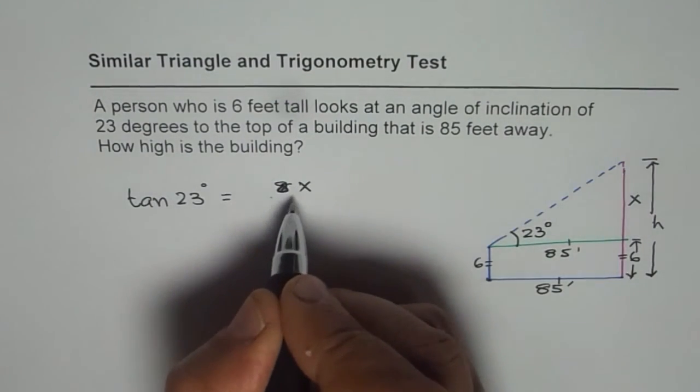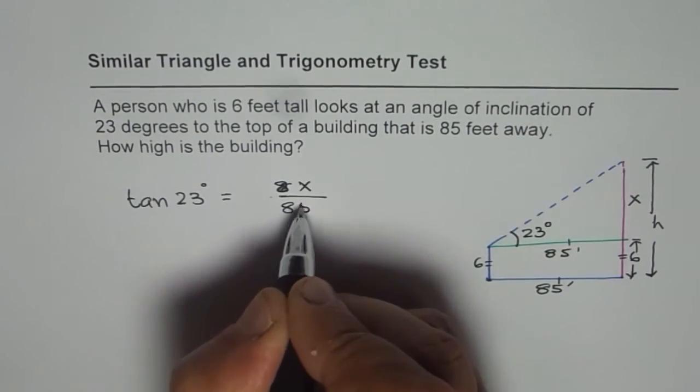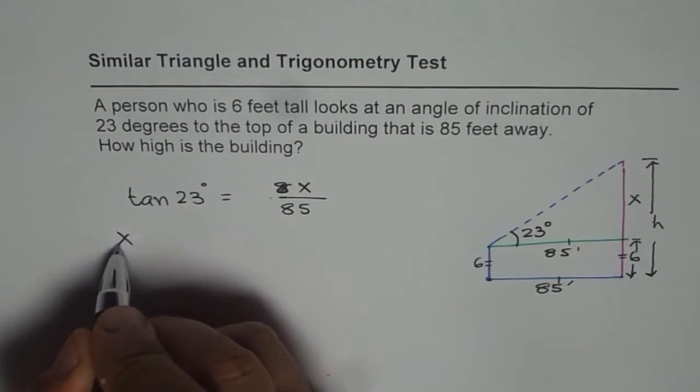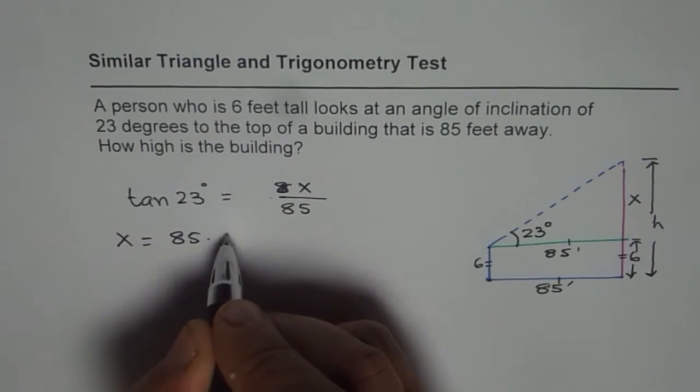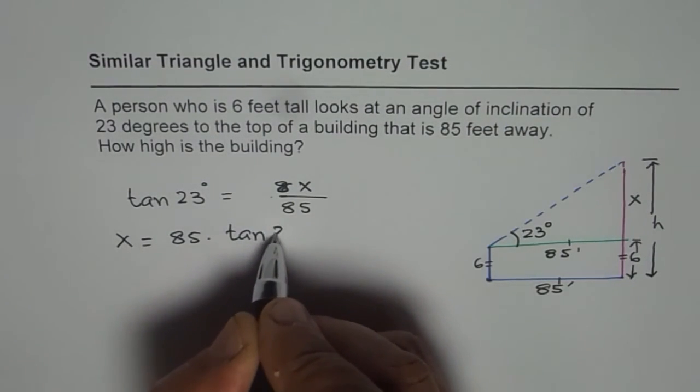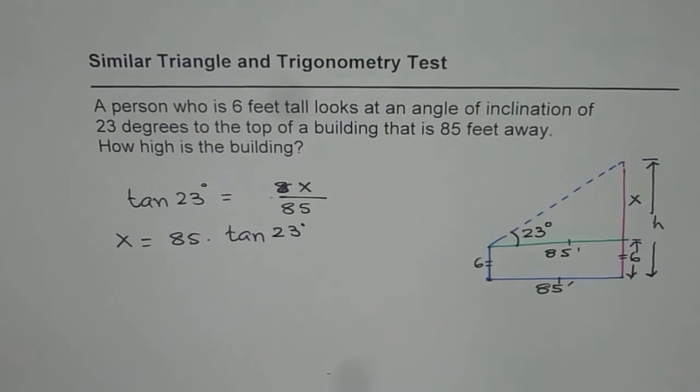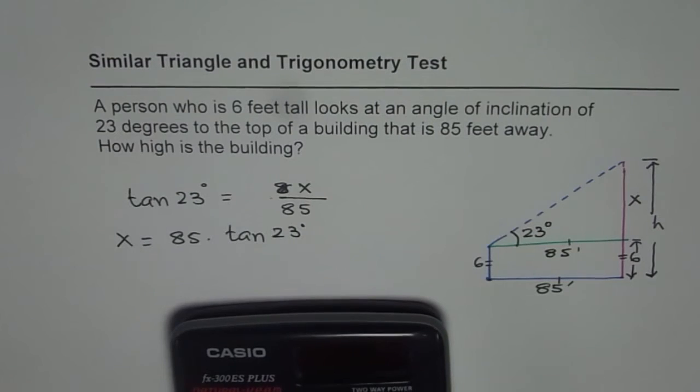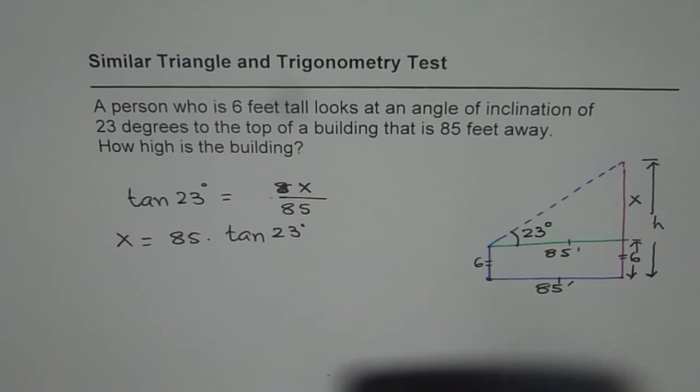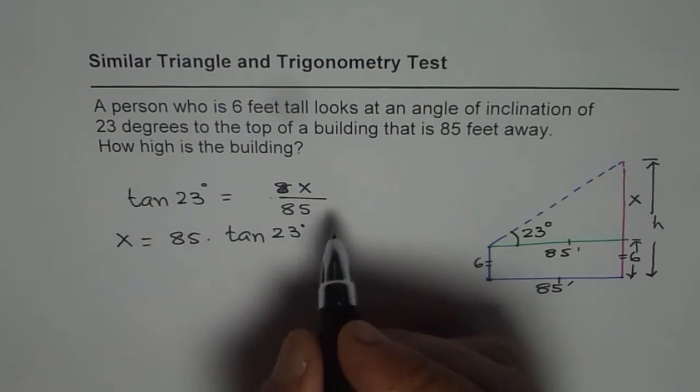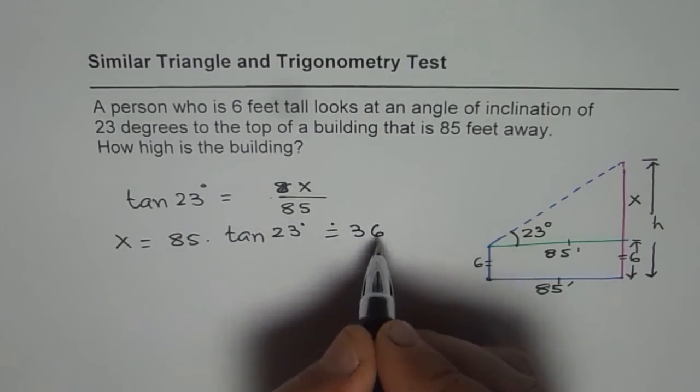Sorry, x over 85. And we can find x from here. x equals 85 times tan of 23 degrees. Use calculator. It should be in degrees. 85 times tan of 23 gives you the value 36.08. So let us say approximately 36.